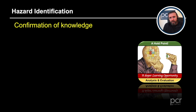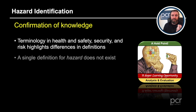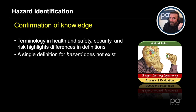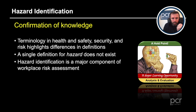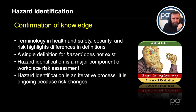To confirm the key takeaways: terminology is very important, whether in safety, security, or risk, because definitions differ. A single definition of hazard does not exist. Hazard identification is a major component of workplace risk assessment and, in some countries — especially the UK — it is a legal requirement. It is also an iterative, ongoing process.